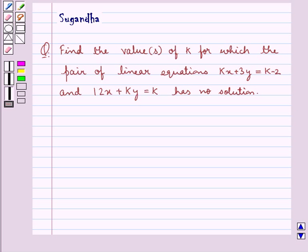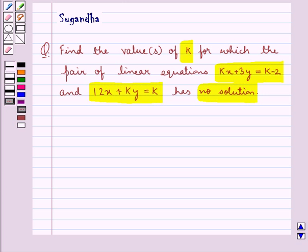Hello and welcome to the session. In this session we discuss the following question which says, find the value or values of k for which the pair of linear equations kx plus 3y equal to k minus 2 and 12x plus ky equal to k has no solution.